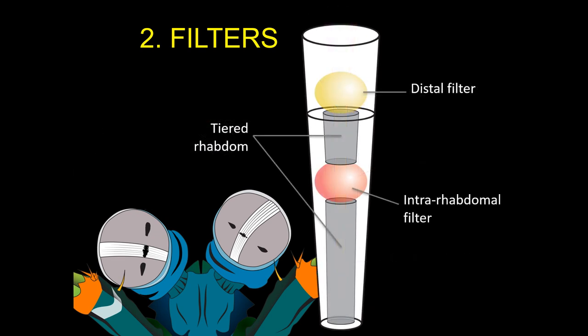Adult mantis shrimp use a unique two-filter system in their eyes. The first colorful filter sits on top of the rhabdom, while the second one bisects the rhabdom into two layers, or tiers, so that each tier may be tuned to different wavelengths by serial filtering. This is a feature of the complex color vision system known in adult mantis shrimp.